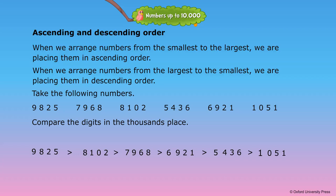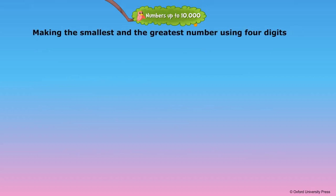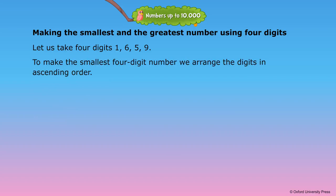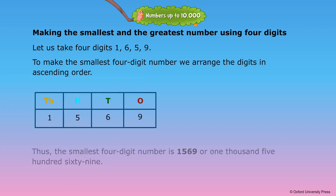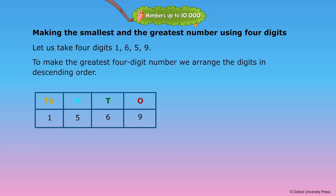Now we have arranged the same numbers in descending order. Making the smallest and the greatest number using 4 digits. Let us take 4 digits: 1, 6, 5, 9. To make the smallest 4-digit number, we arrange the digits in ascending order: 1, 5, 6, 9. The smallest 4-digit number is 1,569. To make the greatest 4-digit number, we arrange the digits in descending order.